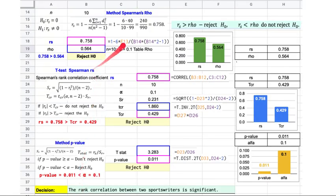There are three methods that you can use to make a decision using the Spearman rank correlation coefficient. One of the methods is method Spearman's RHO.